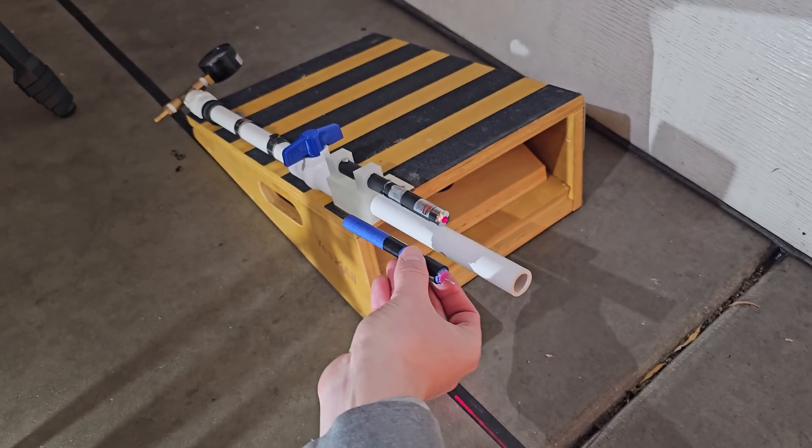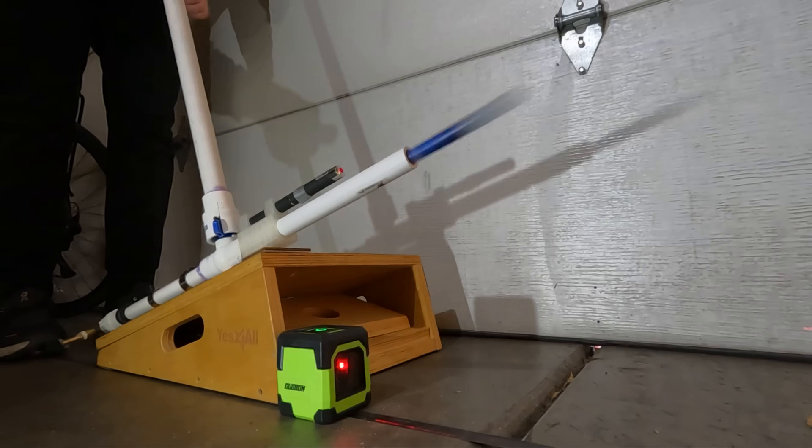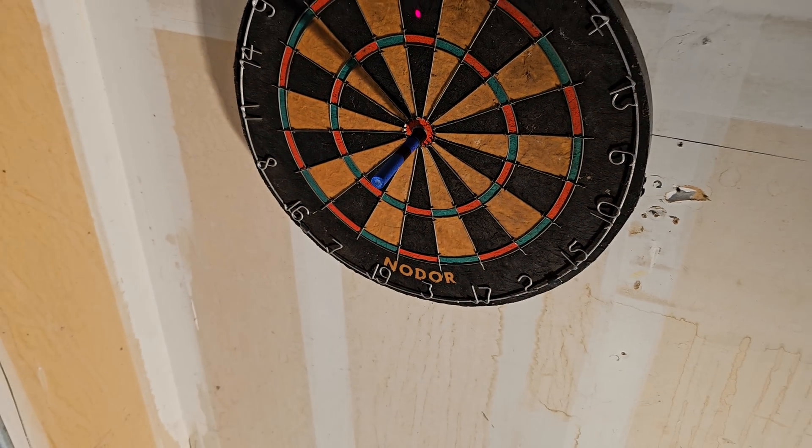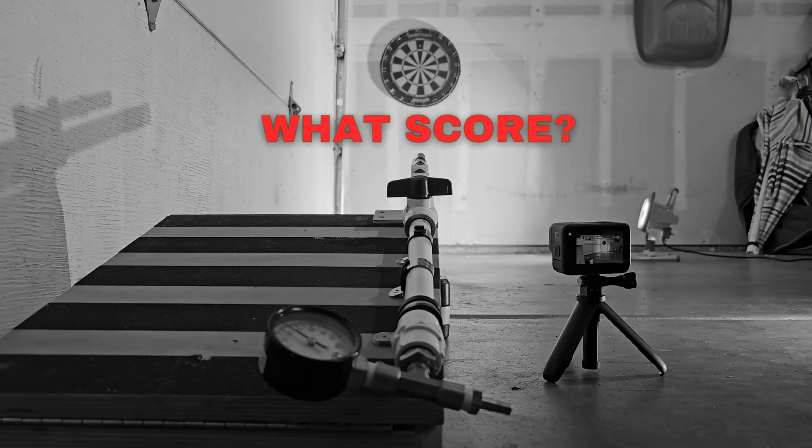If you take a modified dart and place it in the barrel of a pressurized air cannon, when the valve is open the dart should be propelled across the room and get a bullseye on this dartboard. But the question is, what score will it actually get?